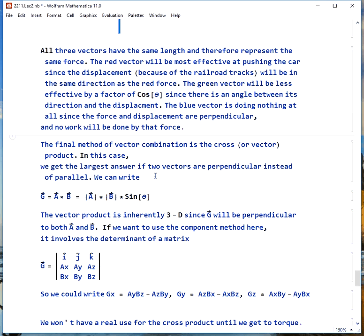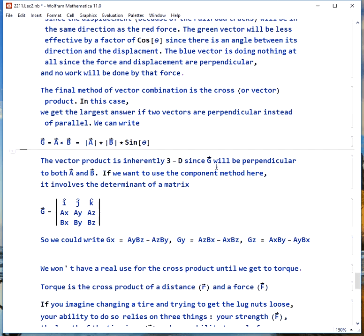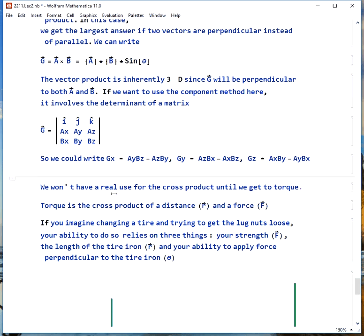We have one other way to multiply vectors, and that's the cross product. This is what gives us a vector. In this case, rather than having the largest answer if two vectors are parallel, we get the largest answer if two vectors are perpendicular. So we could write G as A cross B, and one way to write that is magnitude of A times magnitude of B times sine theta, where it was cosine for the dot product. The vector product has to be 3D, since what we're going to find is this vector G is perpendicular to both A and B. If you wanted to do the component method, if you've had anything to do with matrices and determinants, this is really what you're finding. You've got a matrix that's I hat, J hat, K hat, components of A, components of B. You find the determinant of that. If you haven't seen that, this is the way you would find it with components, this formula.